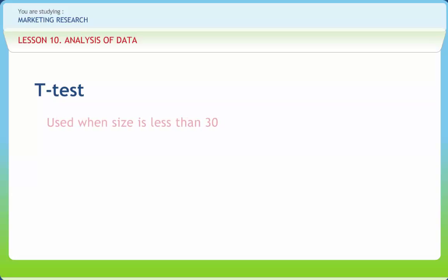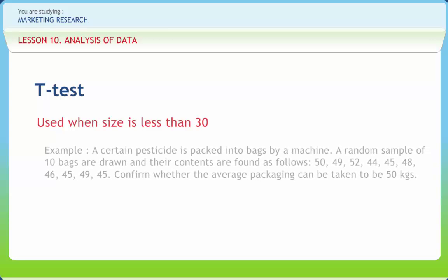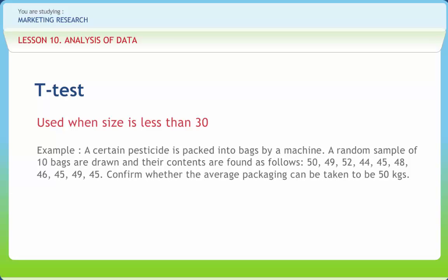T-test is used in the following circumstances when the sample size N is less than 30. For example, a certain pesticide is packed into bags by a machine. Random samples of 10 bags are drawn and their contents are found as follows: 50, 49, 52, 44, 45, 48, 46, 45, 49, 45. Confirm whether the average packing can be taken to be 50 kgs.